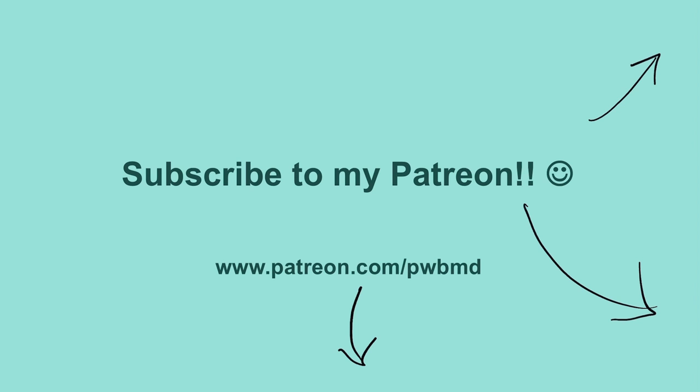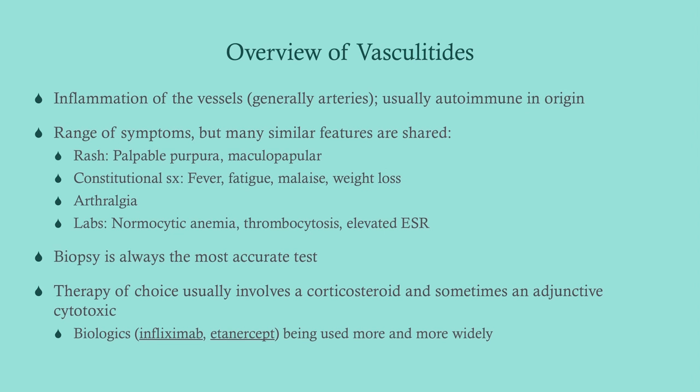Let's do a quick overview of vasculitis. At a fundamental level, it is inflammation of the vessels — usually the arteries — and it is autoimmune in origin. There is a range of symptoms depending on which vasculitis you're dealing with, but there are similar features across most of them, particularly when talking about the small and medium vessels. Most of the time these patients present with fever, pain, and a rash.